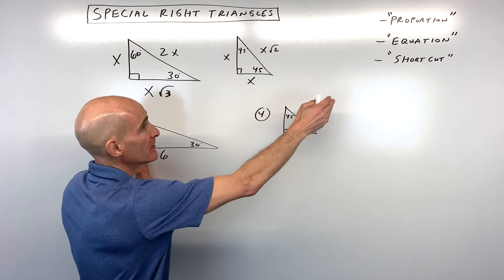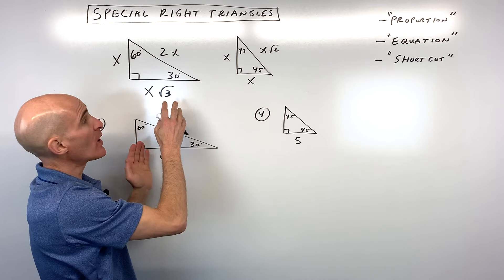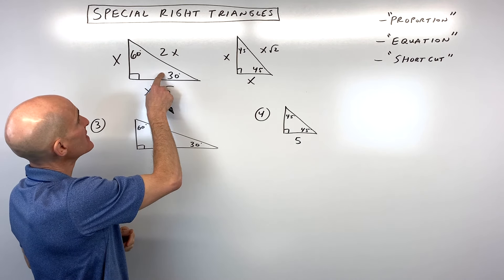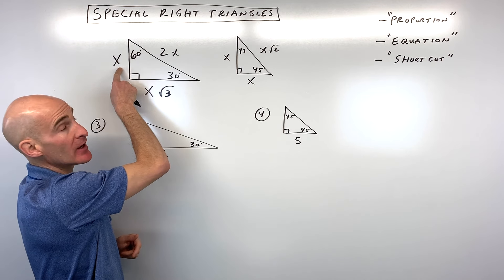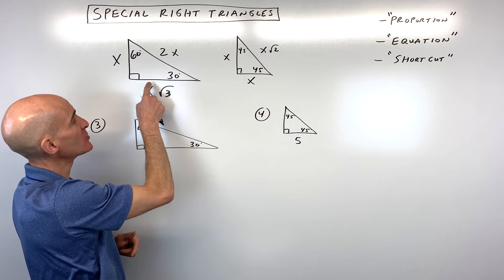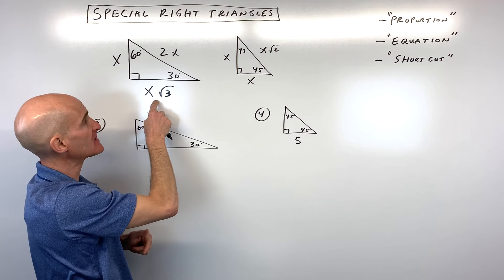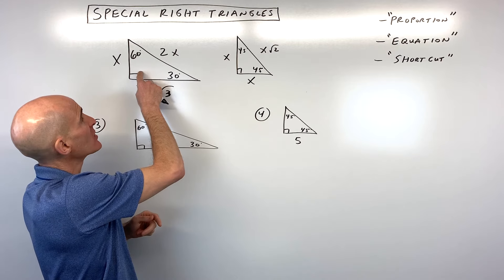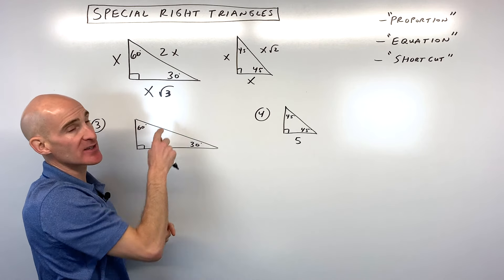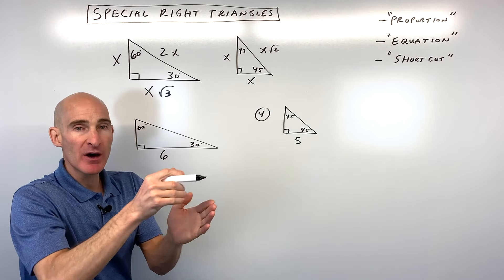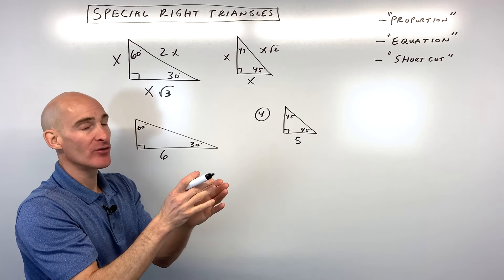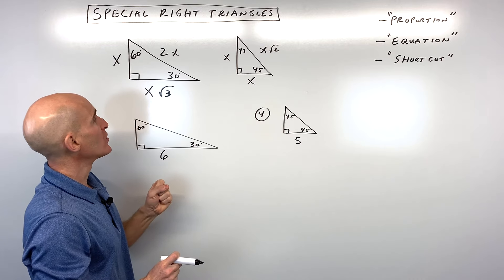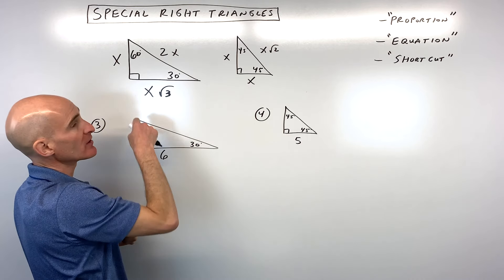Now let's do the equation method. For the equation method, you want to memorize these two triangles with variables. For the 30-60-90: the side across from the 30-degree angle is the short leg, x; the one across from the 60 is the longer leg, x square root of 3 — square root of 3 is about 1.7; and across from the 90 is the hypotenuse, 2x. The larger the angle, the longer the opposite side, like a hinge.